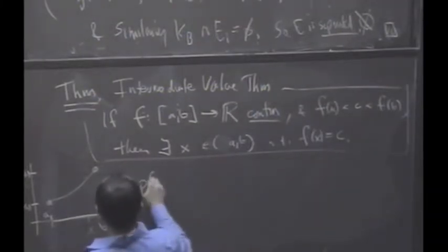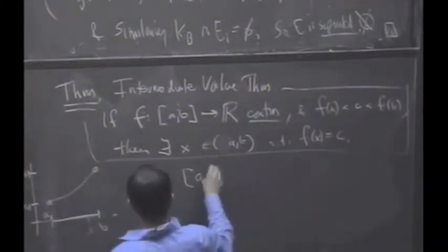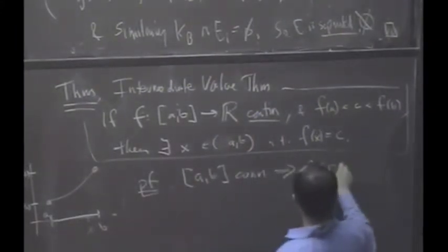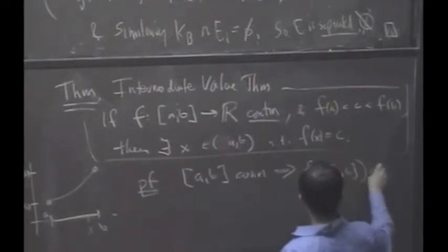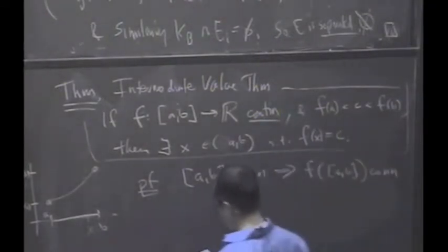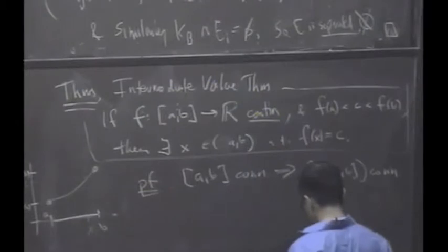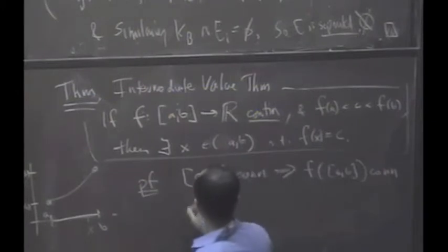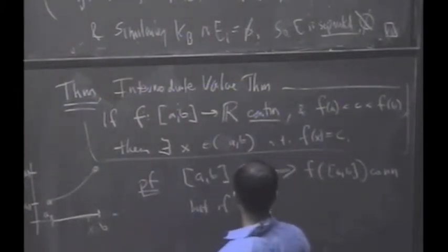So, the proof is noticing that F(A,B) is connected implies the image is connected. And if C is, but, if C is not achieved,